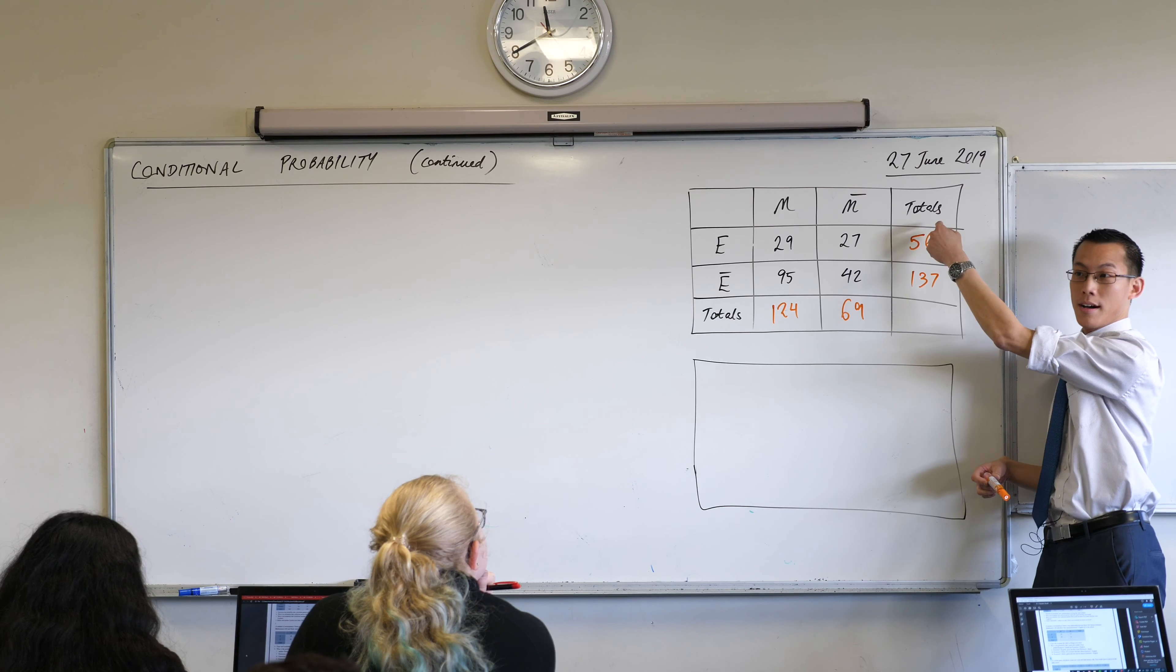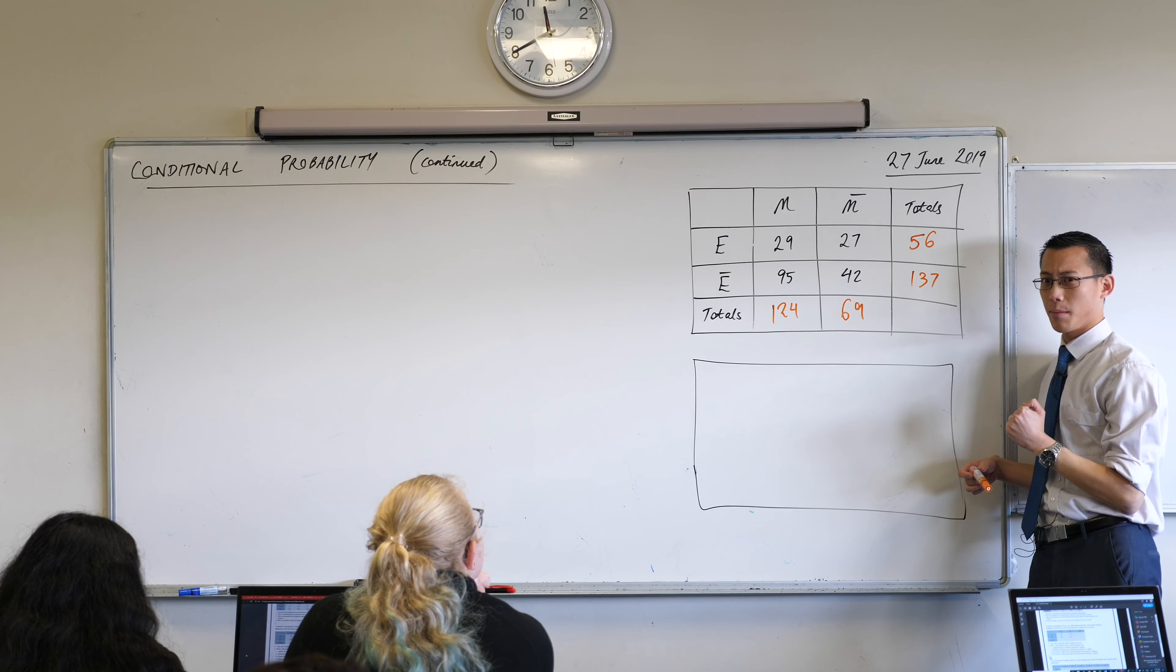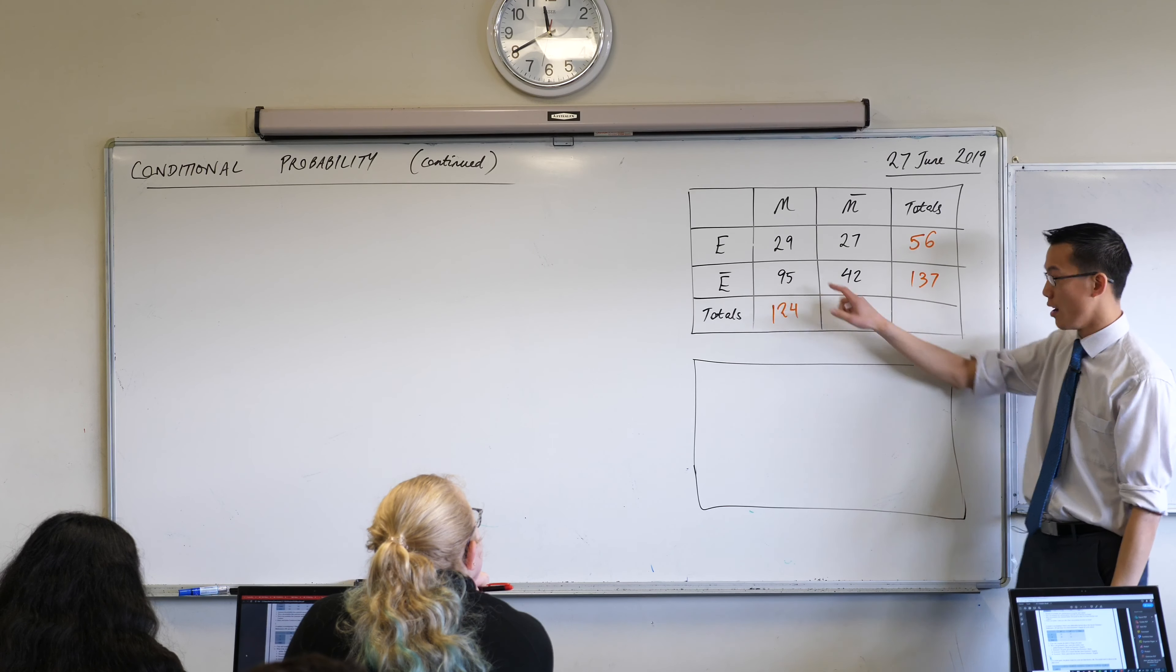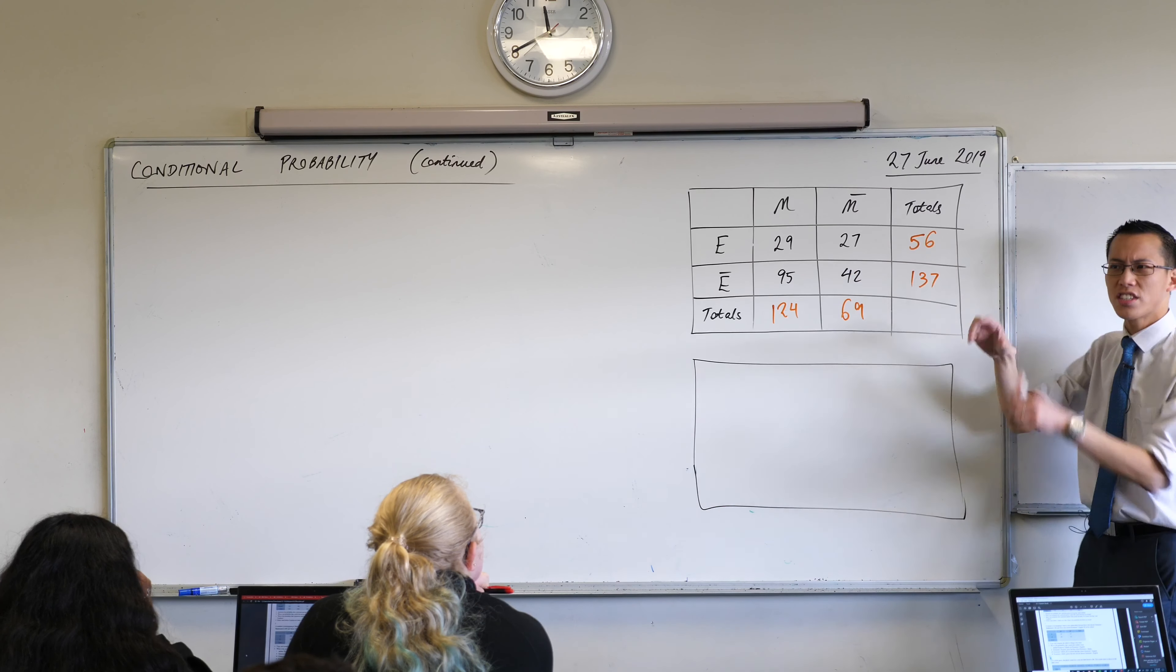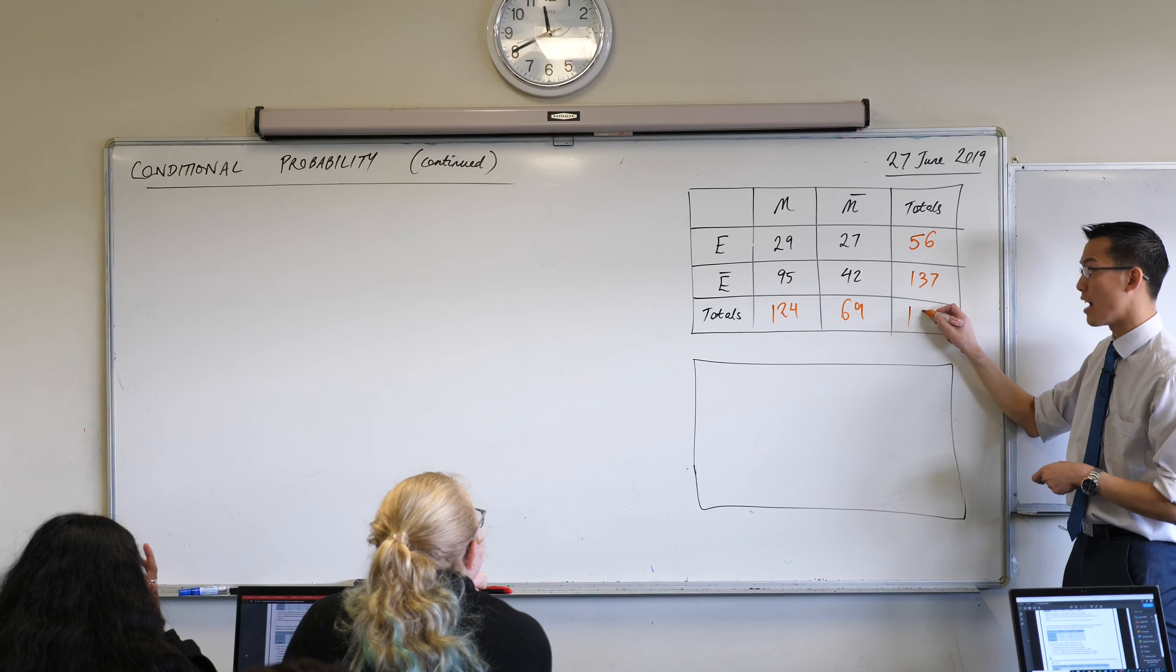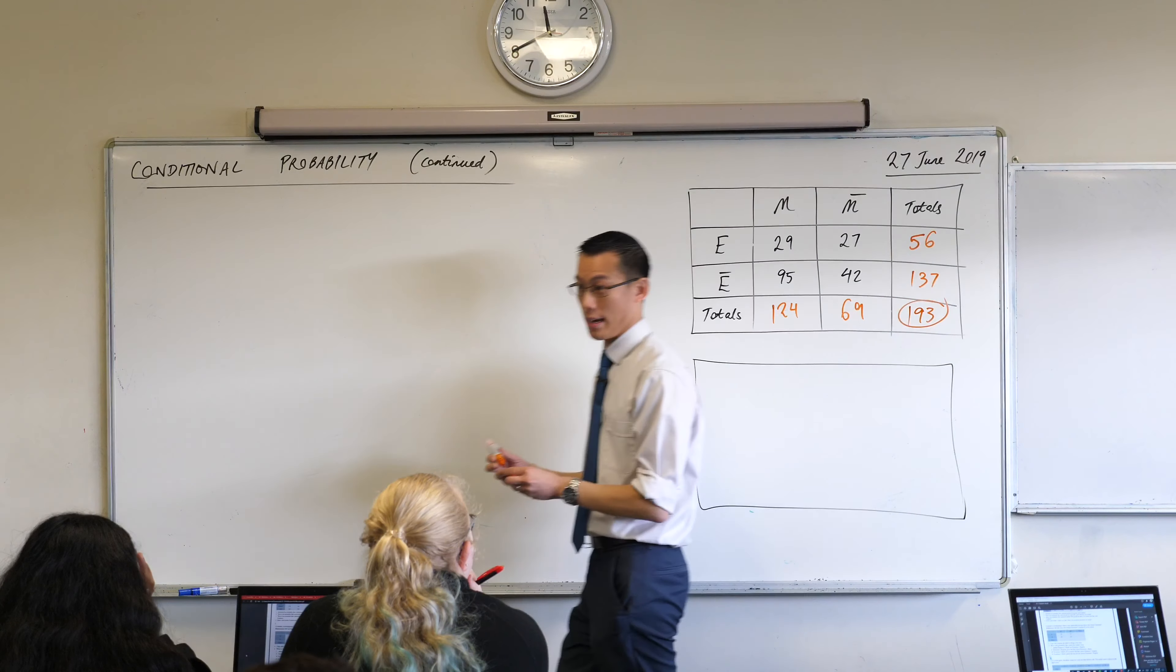We can either add up these guys or we can add up these guys, and they should give us the same total, should they not? Because the way we got this number was by getting these two, the way we got this number is by getting these two, which is the same constituents, parts, that gave us these numbers, just in a different breakdown, right? It should be 193, very good. So this is our total total, all of the students in here, okay?